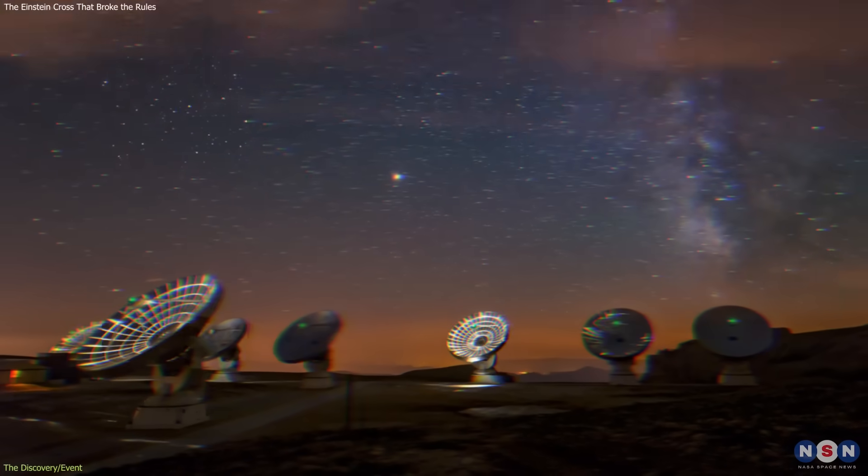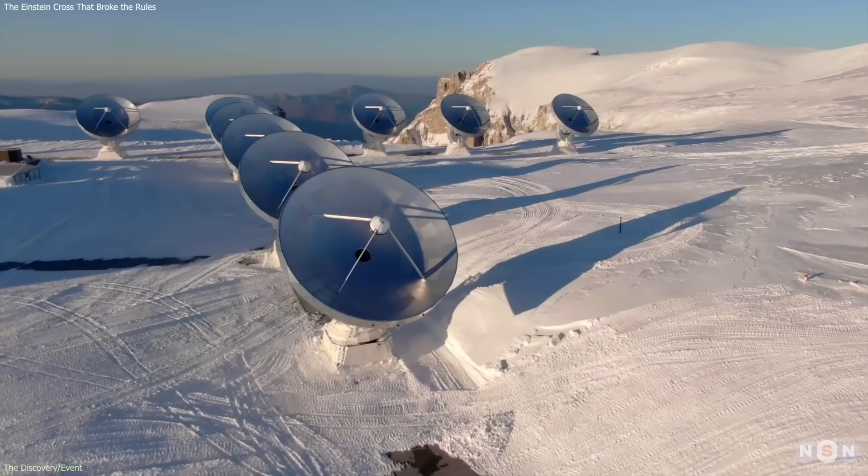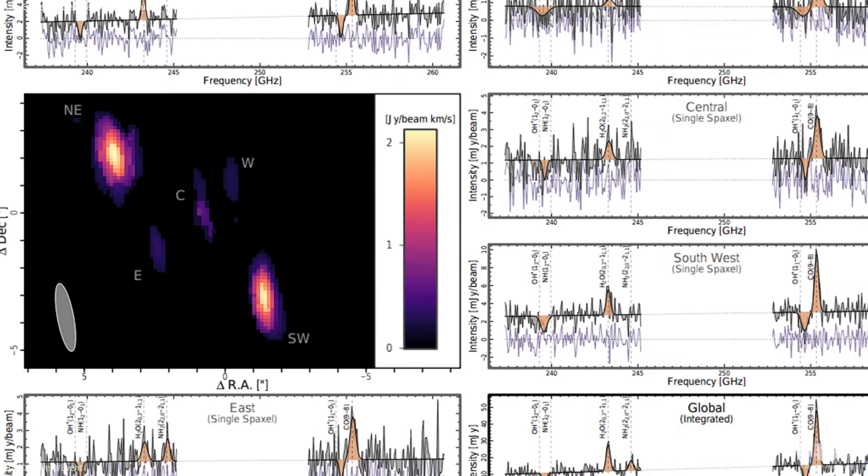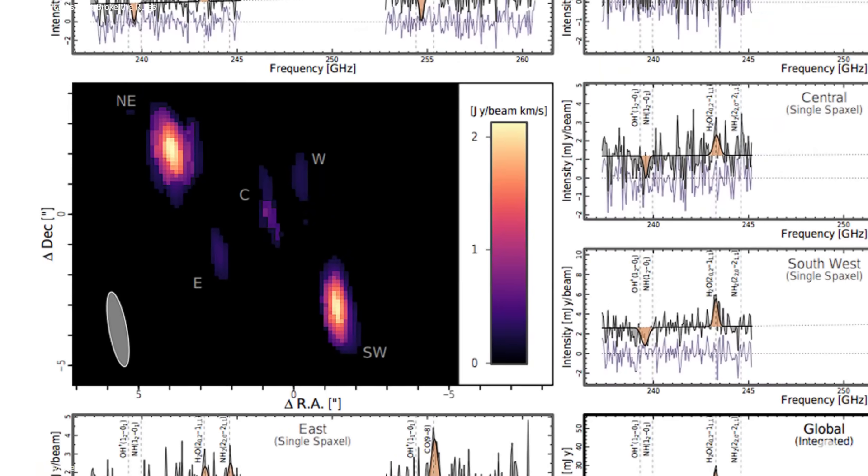The team initially assumed a technical issue. Instrumental glitches are not uncommon in complex arrays. But after reprocessing the data and checking the calibration, the central image remained.